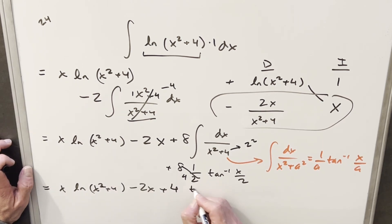And this last piece here is just going to be 4 arctan x over 2 plus c, and that's it.